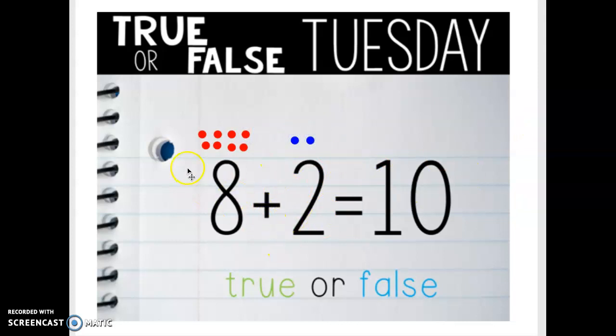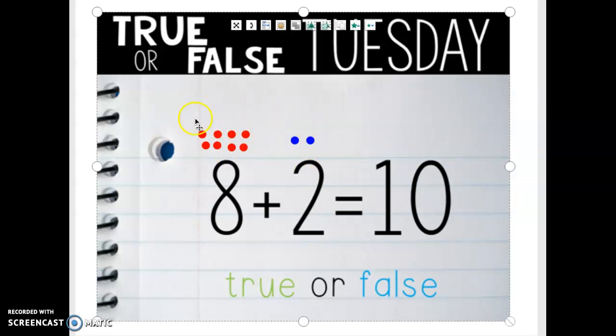The plus sign in the middle means to join. Let's count. 1, 2, 3, 4, 5, 6, 7, 8, 9, 10. This all together equals 10. And this statement down here says 8 plus 2 equals 10. So is this true or false? This is true.